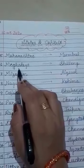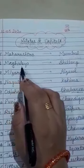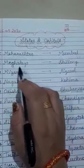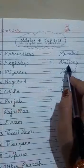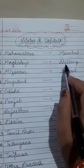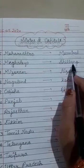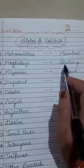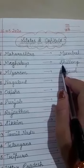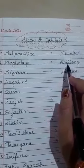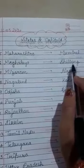Number 16 is Meghalaya, M-E-G-H-A-L-A-Y-A, Meghalaya. Meghalaya's capital is Shillong, S-H-I-L-L-O-N-G, Shillong.